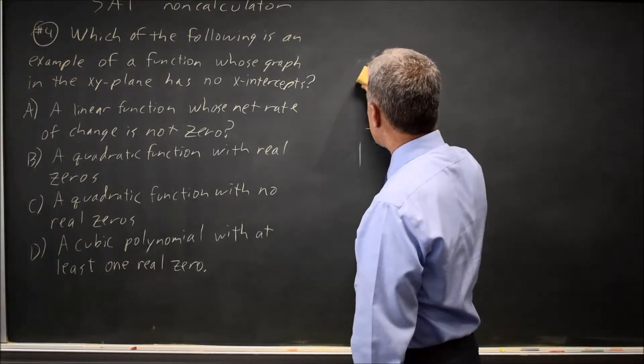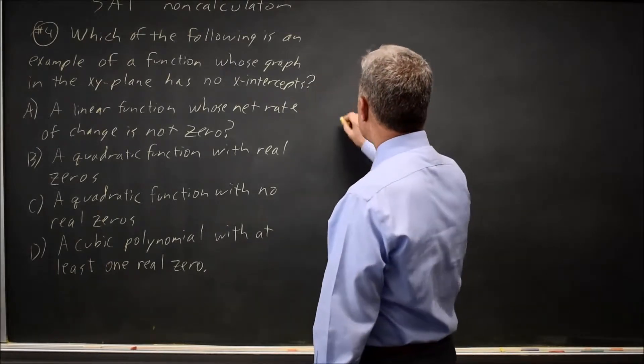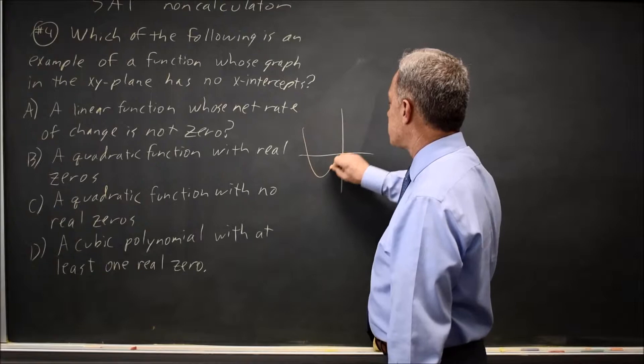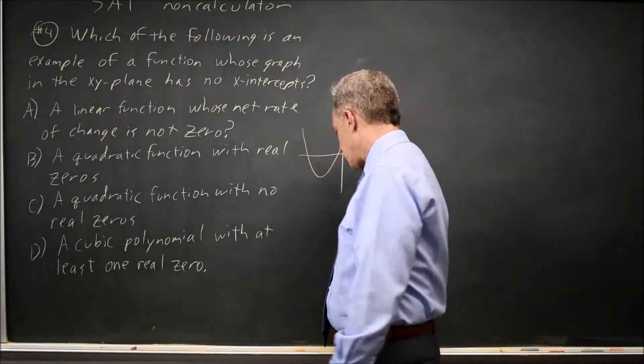Choice B would be a quadratic with real zeros. The zeros are the x-intercepts, so if a quadratic has real zeros, it has one or two x-intercepts, so that does not work.